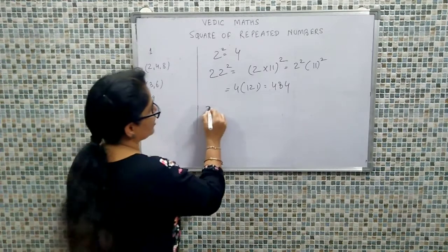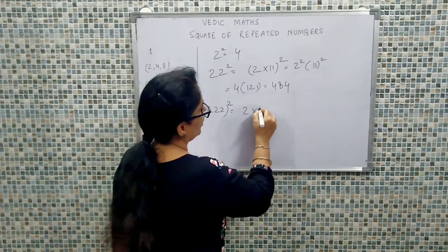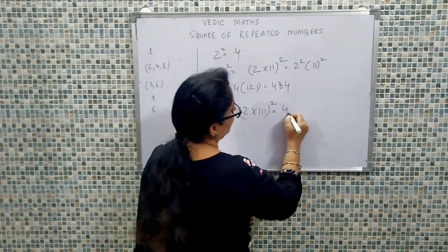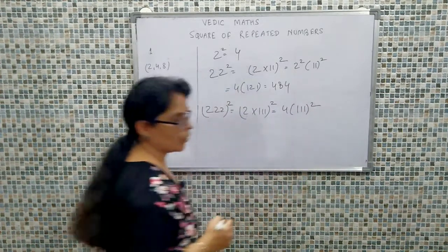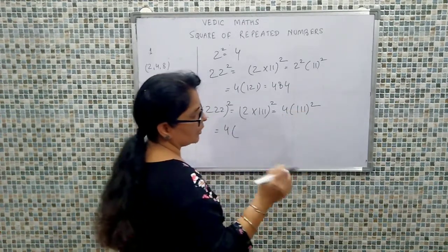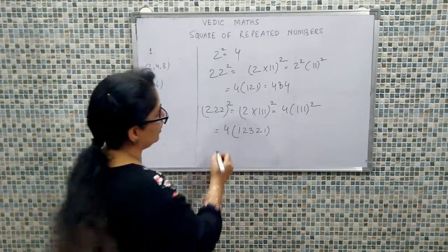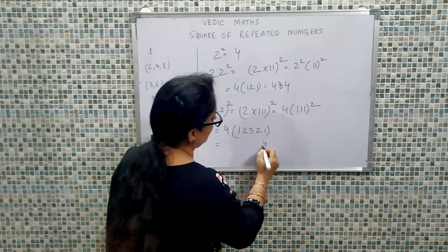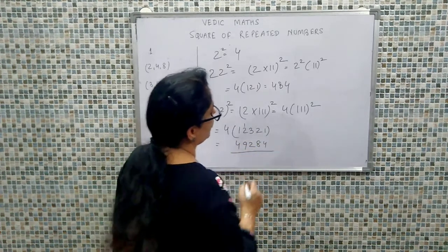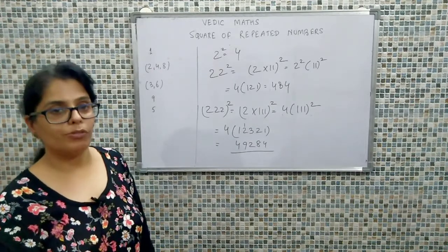Next, agar humara triple two ka square hai. Triple two can be written as two into one-one-one ka whole square. So that will be four into (111)². One-one-one mein kitne ones hain? Three. So it will be: 1, 2, 3, 2, 1. Ab hum isko four se multiply karenge: four ones are four, four twos are eight, four threes are twelve, four twos are eight, four ones are four.